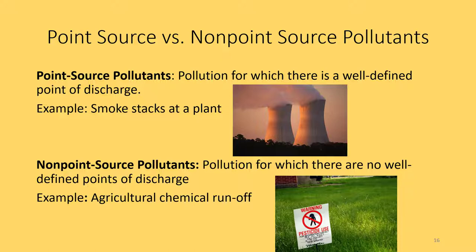You won't know exactly where this agricultural chemical runoff originated from since there are many people contributing — that's an example of a non-point source pollutant. Which is harder for the government to regulate? If you know where the pollution is coming from and can identify its source, you can more easily regulate it. So point source pollutants are generally easier to regulate compared to non-point source pollutants.